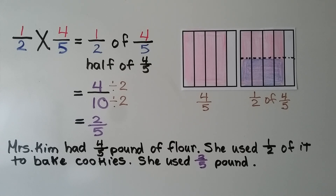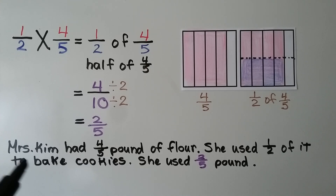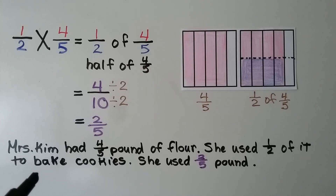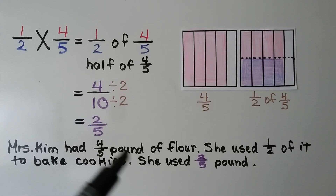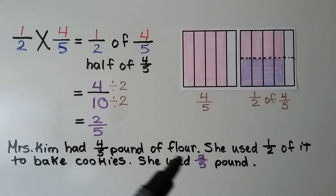We divide the numerator and denominator by their greatest common factor to write it in simplest form, and we get two-fifths. This fits a word problem such as: Mrs. Kim had four-fifths of a pound of flour and she used half of it to bake cookies — she used two-fifths of a pound.